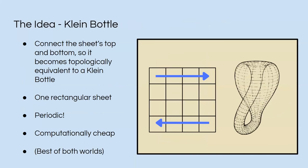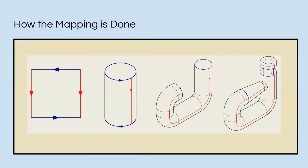So our idea is the Klein bottle. We want to make one sheet, which is computationally cheap, periodic. And how do we do this? We're going to map it to the topology of a Klein bottle. Klein bottle is a two-dimensional manifold. It's pretty funky, but here's a brief diagram about how it works.